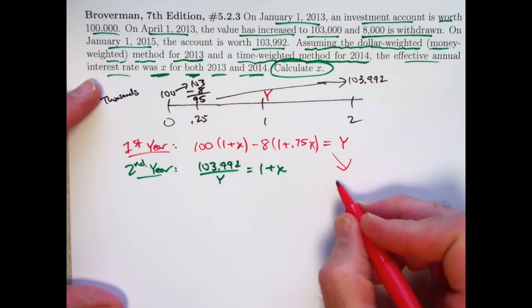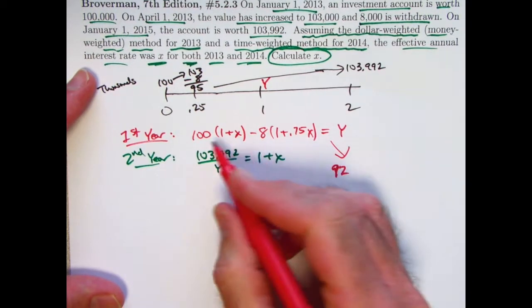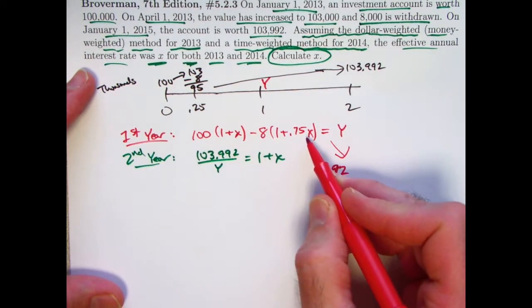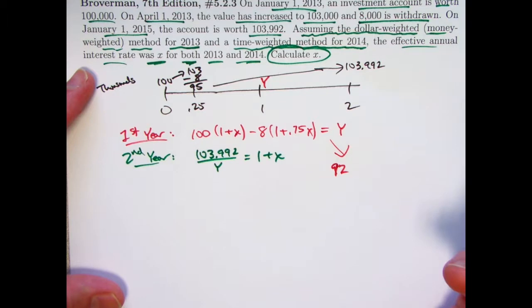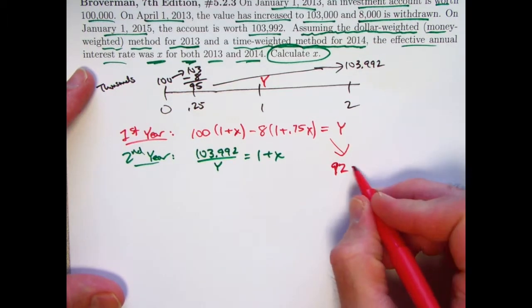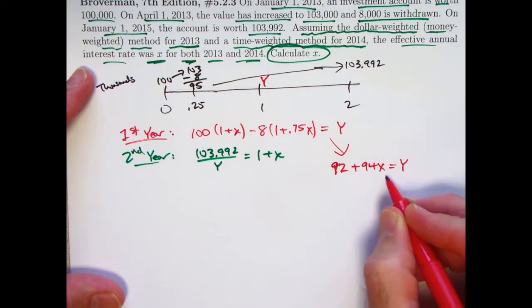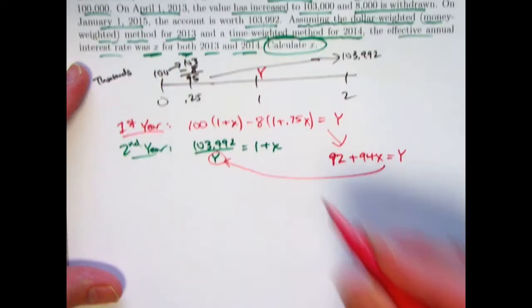So this is going to simplify to, first of all, 100 minus 8 is 92. And then we have 100x minus 8 times 0.75x. 8 times 0.75 is 6. 100 minus 6 is 94. So 92 plus 94x would equal Y.